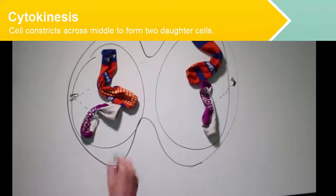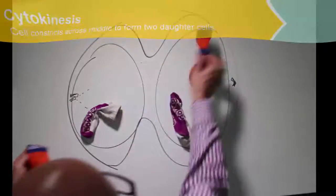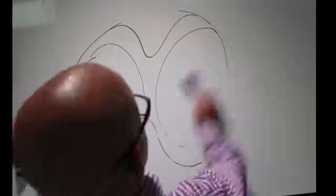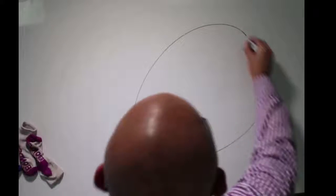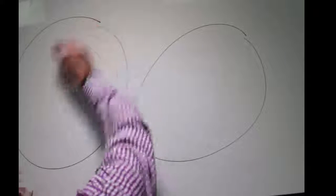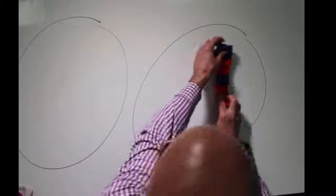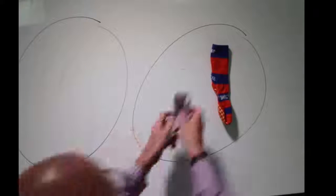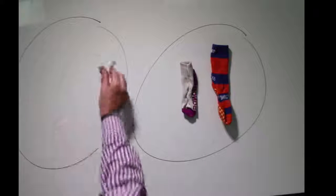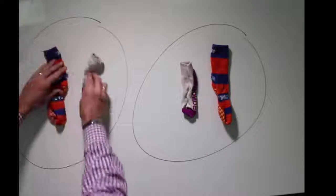Now the cool thing about using my daughter's socks to make daughter cells, ironic. But the cool thing is that I can actually use them as whiteboard erasers. Don't tell my children that. So we end up with two daughter cells each containing a chromosome 1 and a chromosome 2. So now we've got two daughter cells.